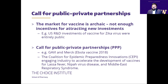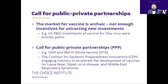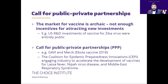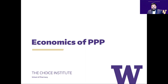In sum, the U.S. market for vaccines is archaic — there is not enough incentive for attracting new investments. For example, U.S. R&D investments for the Zika vaccine were almost entirely public. Yet globally, there has been increased recognition of public-private partnerships for developing vaccines. A classic example was the partnership between Gavi and others that led to the Ebola vaccine in 2018. More recently, CEPI has engaged with several industry partners to develop vaccines across a variety of diseases.